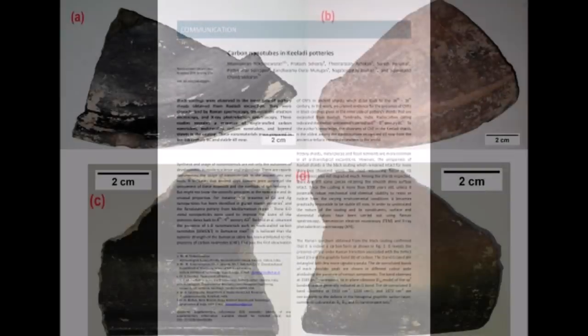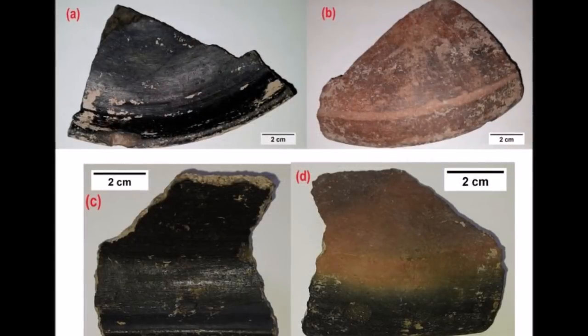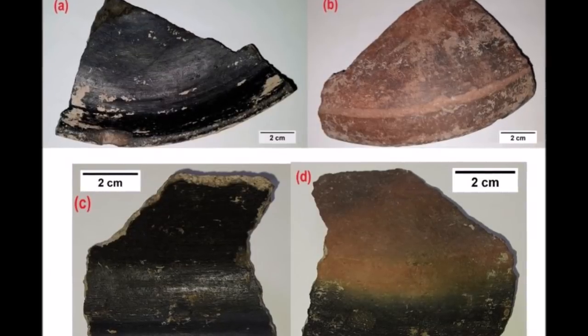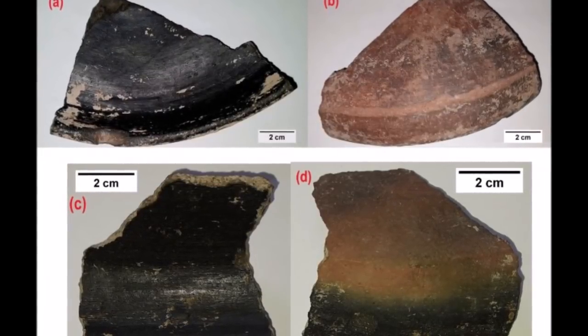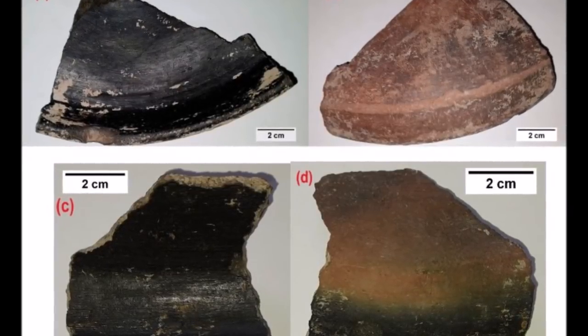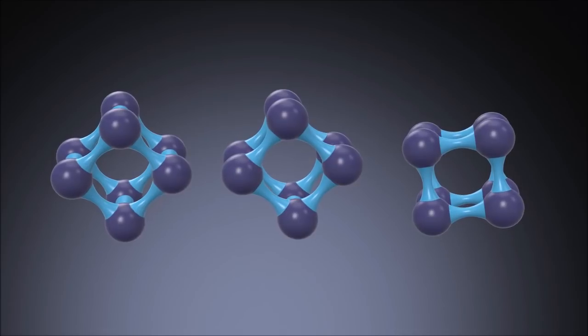Unique black coatings were observed in the inner wall of pottery shreds excavated from Keeladi, Tamil Nadu, India. Raman spectroscopy, transmission electron microscopy and X-ray photoelectron spectroscopy were used to understand the nature of the coating.